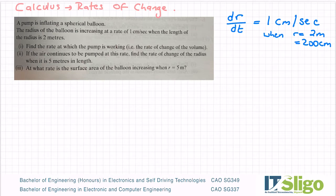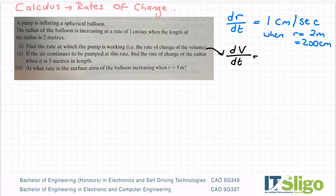Part one said: find the rate at which the pump is working — so find the rate of change of volume. The rate of change of volume is the rate of change of volume with respect to time. You can take the rate of change of volume and you can break it up into parts.